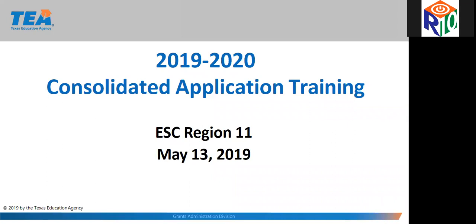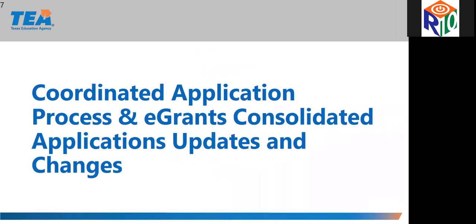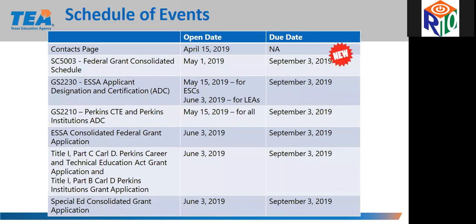All references to the slide numbers are from your PDF handouts. Slides one through six of your handout pertain to the May 13 TEA presentation only. Updates and changes will begin on slide seven. Here are the schedule of events. June 3rd is the opening date for the grant application screens, and all grants are due no later than September 3rd.